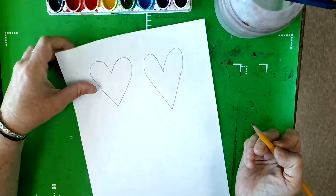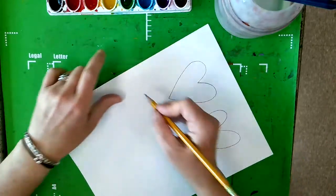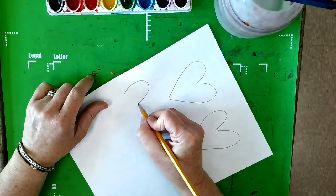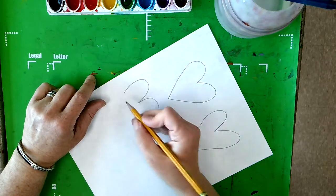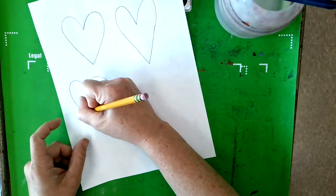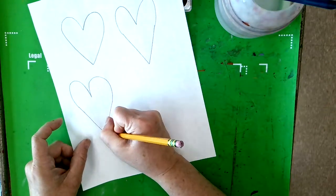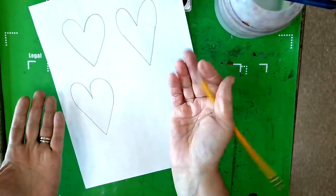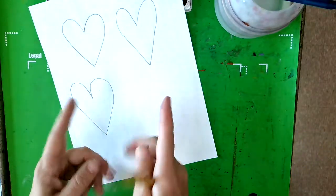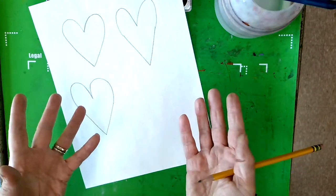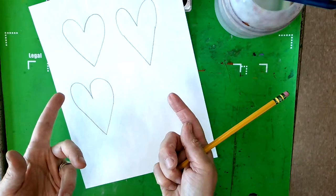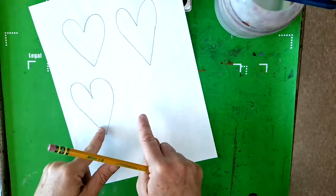Another way you can do it is turn your paper and write a three. I know everybody here can write the number three, and then put the V on the bottom. So many ways. Maybe even you have a different way to draw a heart, and you could teach your classmates and your teacher how you do it. So practice first.